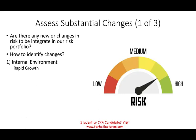What are those internal environment factors? Rapid growth — if you're growing too fast, you may not be able to keep up, and sometimes you might fall under your own weight. If you have a lot of sales and cannot keep up, customers may leave. Innovations — a new innovation making your product obsolete is a threat. Constant employee turnover means you don't retain good people. And leadership changes — a new CEO, CFO, or chief risk officer — will change your culture and, as a result, might change your risk profile.